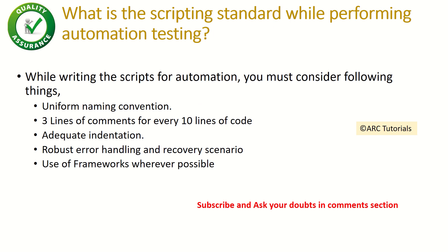The next question is: what is the scripting standard while performing automation testing? The interviewer is asking about coding standards and the quality of automation scripts. While writing automation scripts you must consider: uniform naming conventions, three lines of comments for every ten lines of code, code that is well-maintained and easy to understand, adequate indentation, robust error handling and recovery scenarios to handle negative use cases, and use of frameworks wherever possible — limit writing custom code.